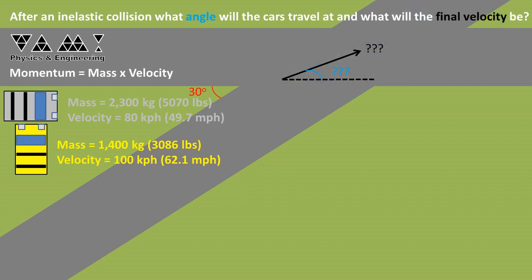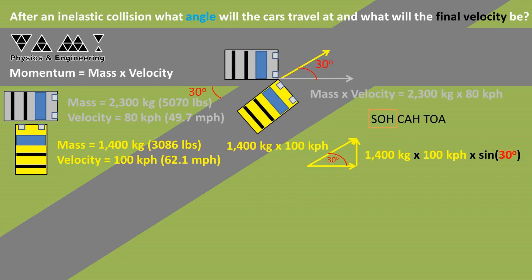How do we go about solving this one? Let's first break the yellow car's momentum into x and y vectors. We do this by creating a right triangle, then using the property of right triangles, SOHCAHTOA. Recall that the sine of the angle is equal to the opposite side of that angle over the hypotenuse or longest side of the triangle.